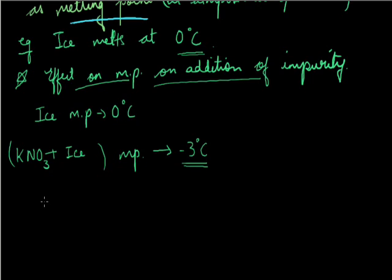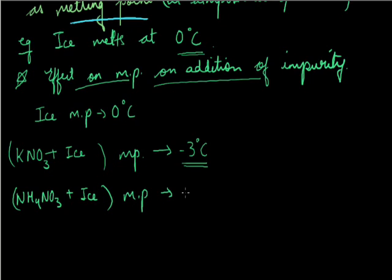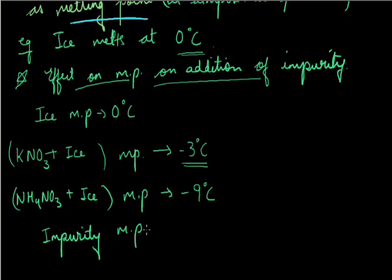This is sometimes useful — for example, in places where there is snowfall and roads are covered with ice. If we add some impurity, the melting point decreases, and we can remove all the ice. Since the melting point and freezing point of a substance are always the same, the substance will not freeze till that degree Celsius. Another example: adding ammonium nitrate to ice changes the melting point to minus 9 degrees Celsius. In general, adding impurity decreases the melting point of a substance.